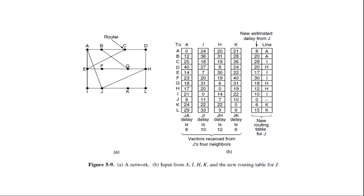The updating process is illustrated here in figure. You can see here. And here part A shows a network. And the first four columns of part B shows the delay vectors received from the neighbors of router J. A claims to have a 12 ms delay to B, a 25 ms delay to C, a 40 ms delay to D, etc.